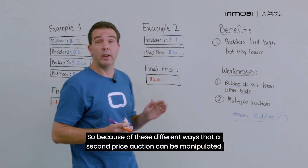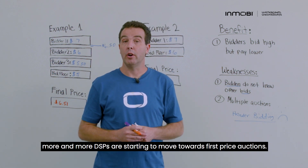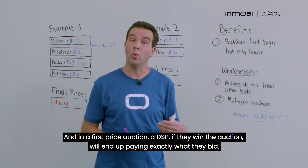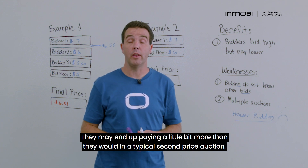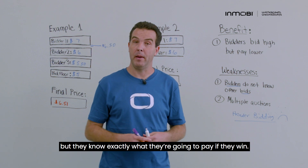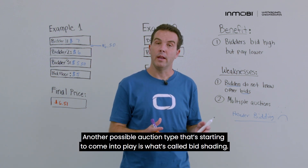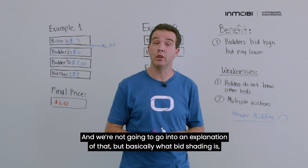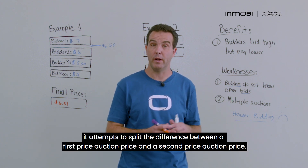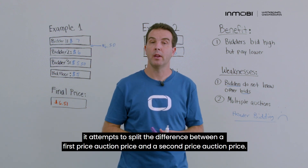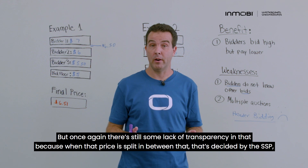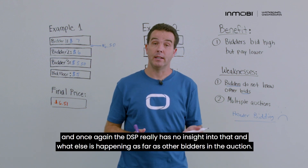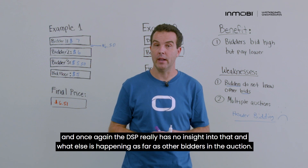Because of these different ways a second price auction can be manipulated, more and more DSPs are starting to move towards first price auctions. In a first price auction, if a DSP wins, they pay exactly what they bid — they may pay a little more than in a typical second price auction, but they know exactly what they'll pay. Another auction type emerging is bid shading, which attempts to split the difference between first and second price auction prices. But there's still a lack of transparency because the price split is decided by the SSP, and the DSP has no insight into that or what other bidders are doing.